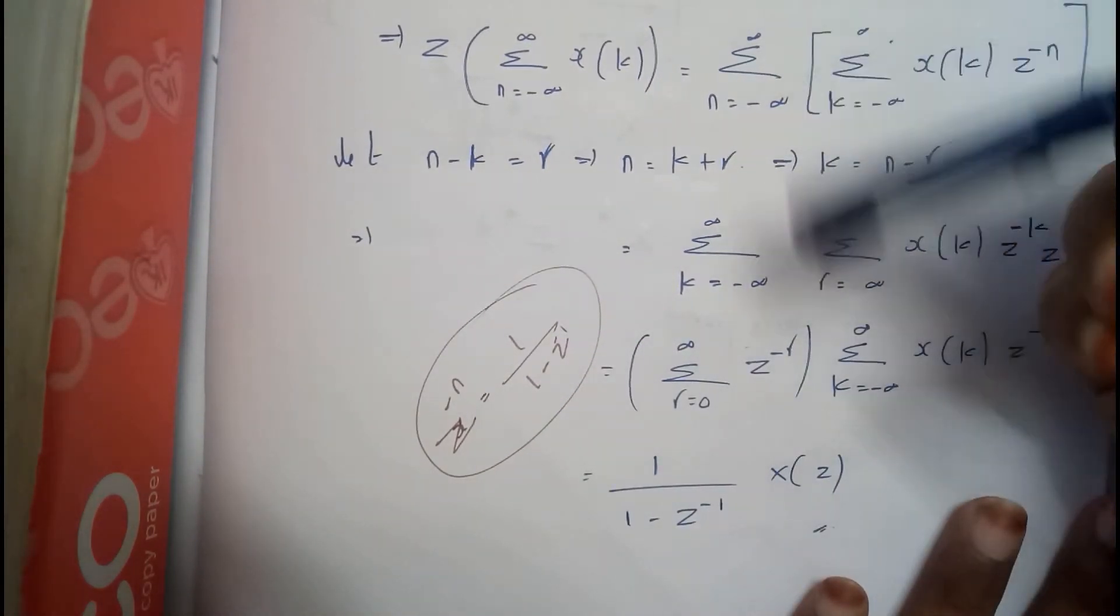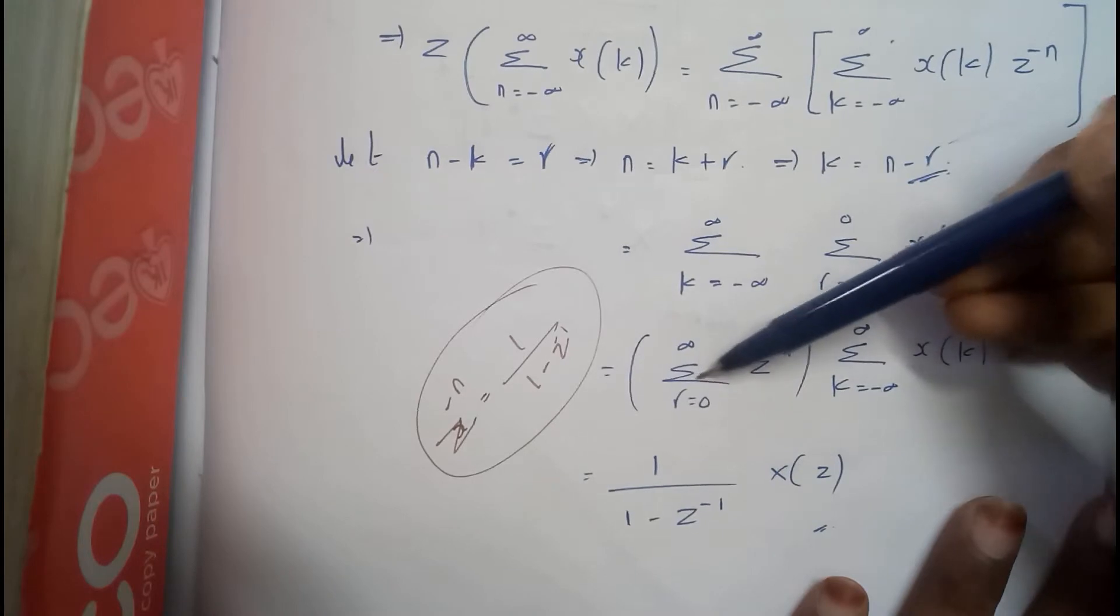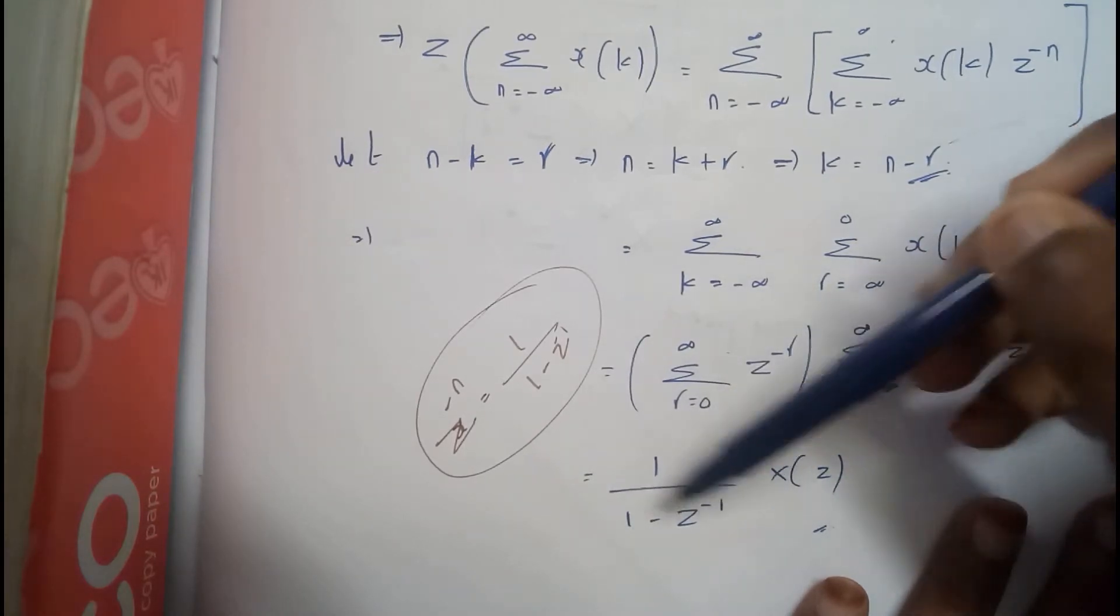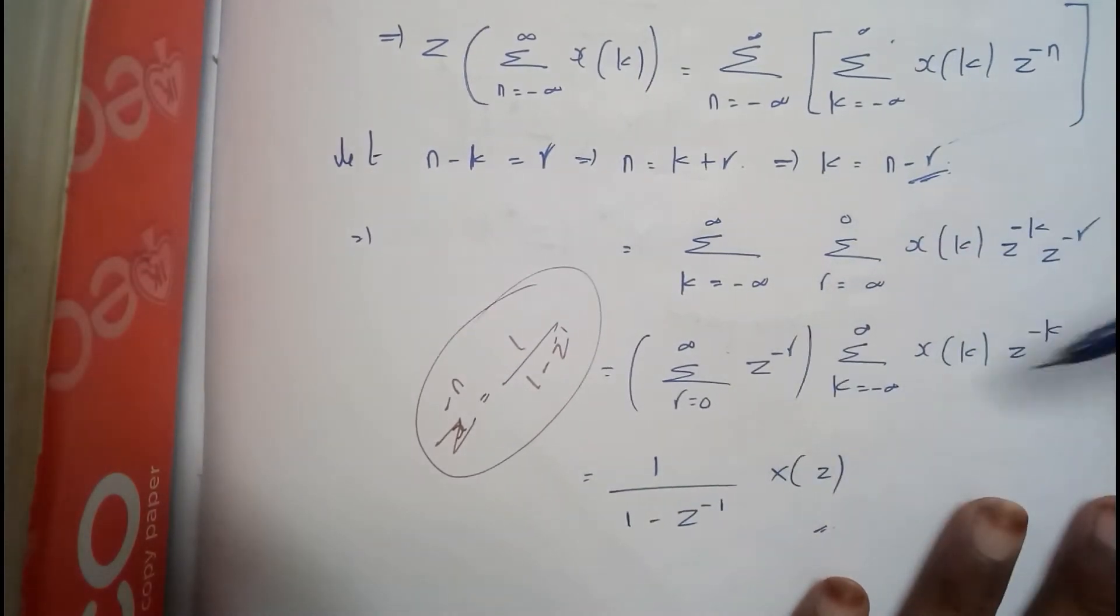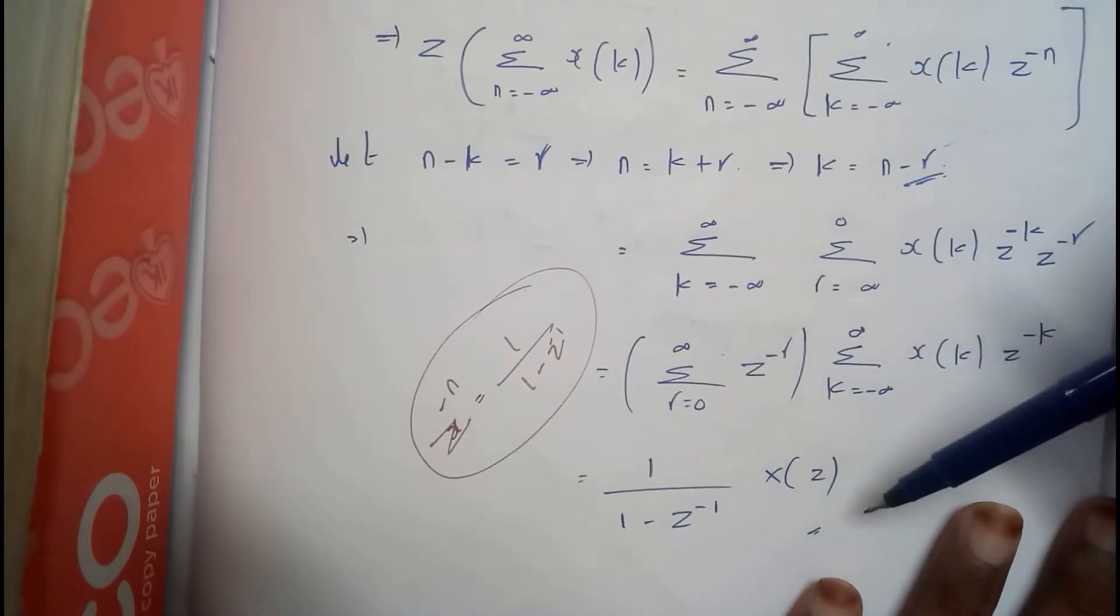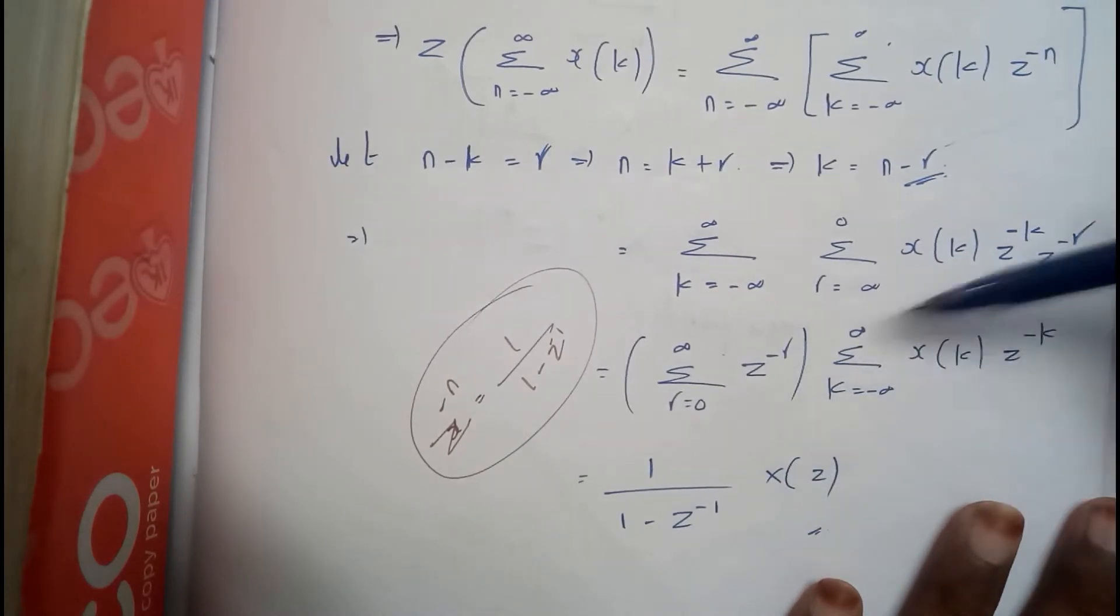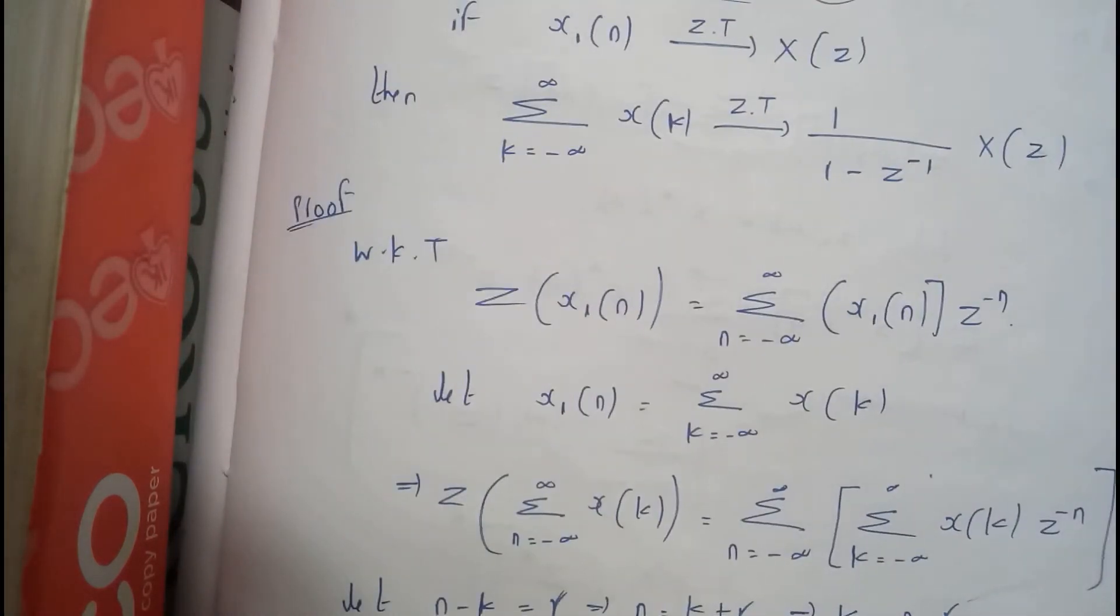Okay, so now I hope everyone got an idea about this. This is the formula which we will be substituting. We get 1/(1 - z⁻¹). So this whole part is nothing but X(z). The z-transform - this x(k) - is this formula. So we will be assuming the result as X(z). This is what the accumulation property says.